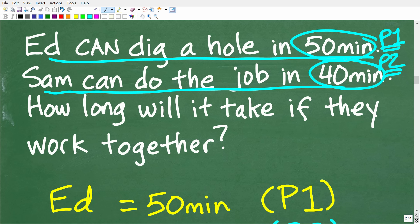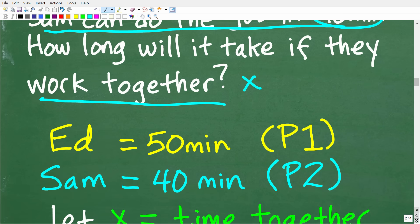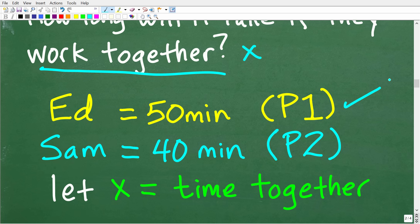Now, the question is, how long will it take if they work together? Now, this is an unknown value. So, we'll use the variable X to represent that unknown. So, what we have here is Ed's time is equal to 50 minutes. Again, that would be P1. Sam's time is equal to 40 minutes. That would be P2. And we'll let X equal the time it takes them, the time it will take if they work together.